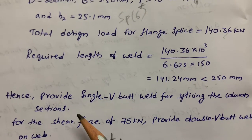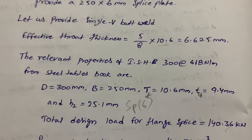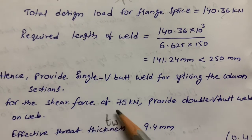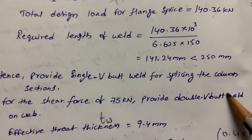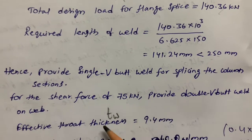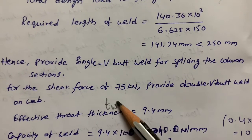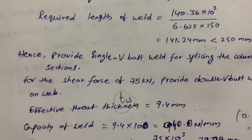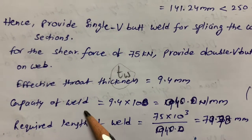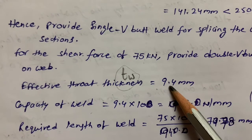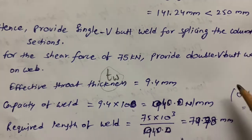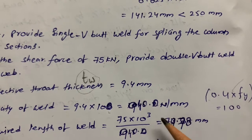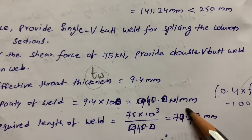For the web splice, we design for the shear force of 75 kN. We provide a double-V butt weld on the web. The web thickness is 9.4 mm, which gives the effective throat thickness. The capacity of the weld is calculated as: effective throat thickness × 100, where 100 = 0.4 × yield stress (as per code), giving 940 N/mm.